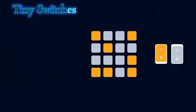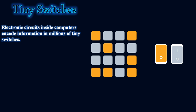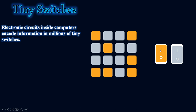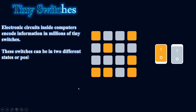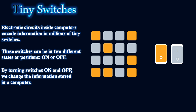What are tiny switches? Electronic circuits inside computers encode and encapsulate information in millions of tiny switches. The state of each switch is either on or off. There are tons of switches that can be on or off, and according to the information stored, the state of these switches will change. These switches can be in two different states or positions: on or off. By turning switches on and off, we change the information stored in a computer.